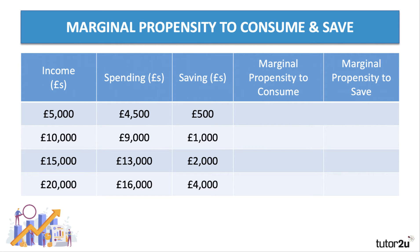In an exam you may have to do calculations, so here is some data on income, spending, and saving. Remember: your income can either be spent or saved. When income rises from five thousand to ten thousand, people are spending four and a half thousand more — ninety percent of the gain in income. When it goes up from ten thousand to fifteen thousand, they're spending four thousand more — eighty percent of the change in income. By definition, the marginal propensity to consume plus the marginal propensity to save must add up to one.